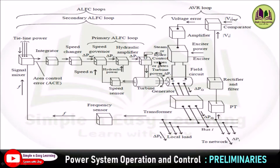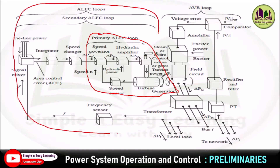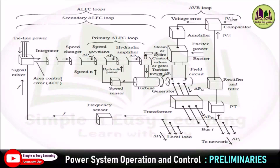Consider this diagram. It consists of three categories. The first is the primary ALFC loop, which consists of all parameters up to a certain path. Along with this primary, the whole system is called the secondary ALFC loop. The third is the AVR loop, which follows a separate path. We will see each one by one.